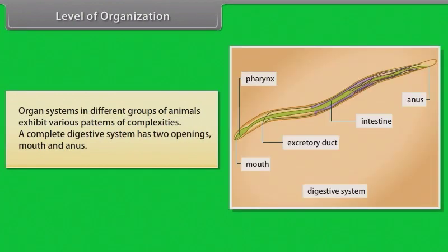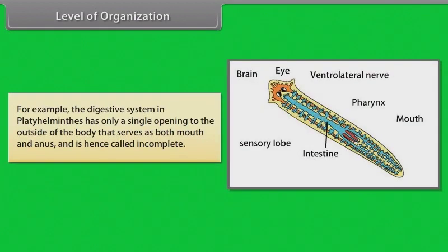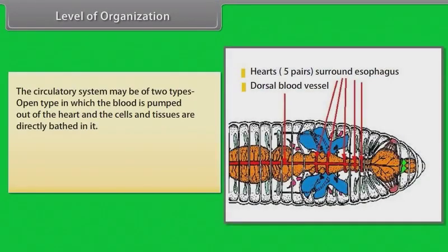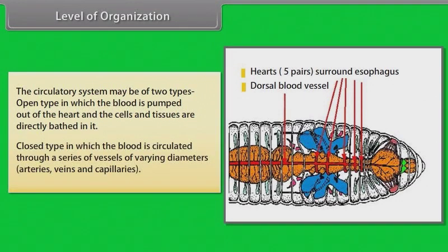A complete digestive system has two openings: mouth and anus. The digestive system in Platyhelminthes has only a single opening to the outside that serves as both mouth and anus, and is hence called incomplete. The circulatory system may be open type, in which blood is pumped out of the heart and cells are directly bathed in it, or closed type, in which blood circulates through arteries, veins and capillaries.